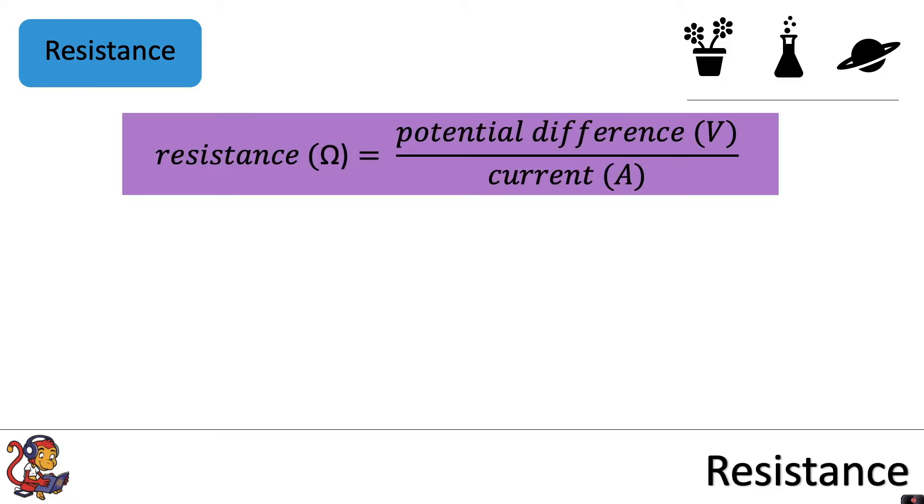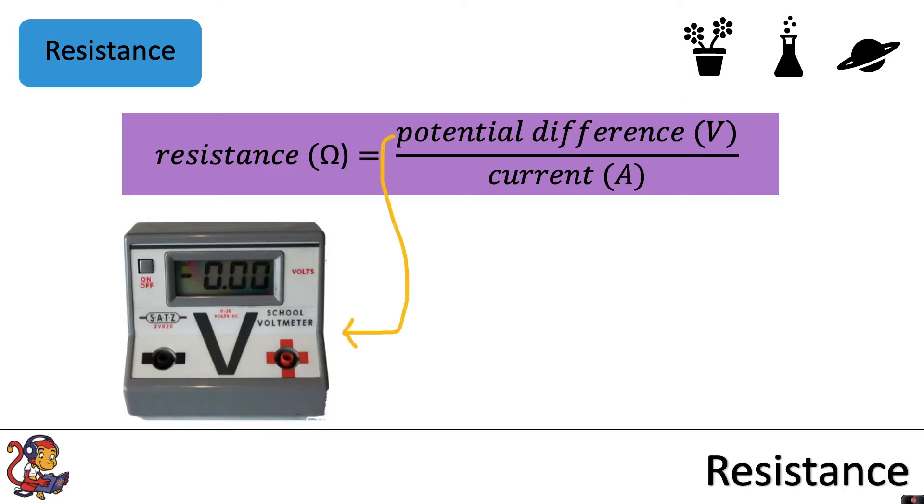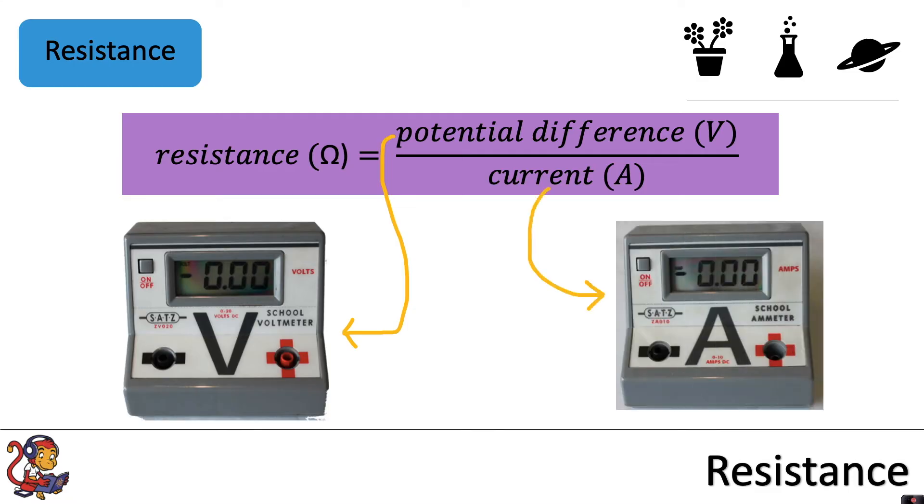So to measure the resistance of a component we need to measure the potential difference, which we would do using a voltmeter, and we would need to measure the current, which we would do using an ammeter.